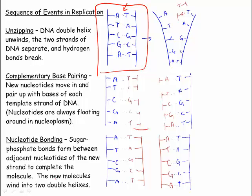In the third stage, nucleotide bonding, sugar phosphate bonds form between adjacent nucleotides of the new strand to complete the molecule. The new molecules wind into two double helices.